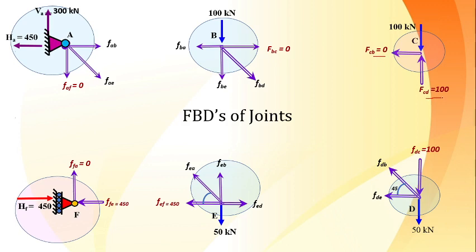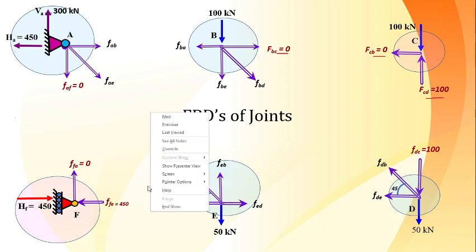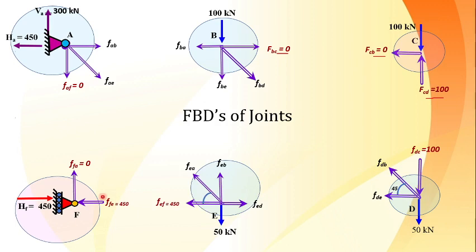Drawing the free body diagram of joint A: the inclined member FAE must be resolved into components. Applying sigma Fx = 0: -450 + FAB + FAE × cos45 = 0. Applying sigma Fy = 0: VA - FAF - FAE × sin45 = 0. Since FAF = 0 (found earlier), substituting VA = 300 and solving these equations simultaneously.